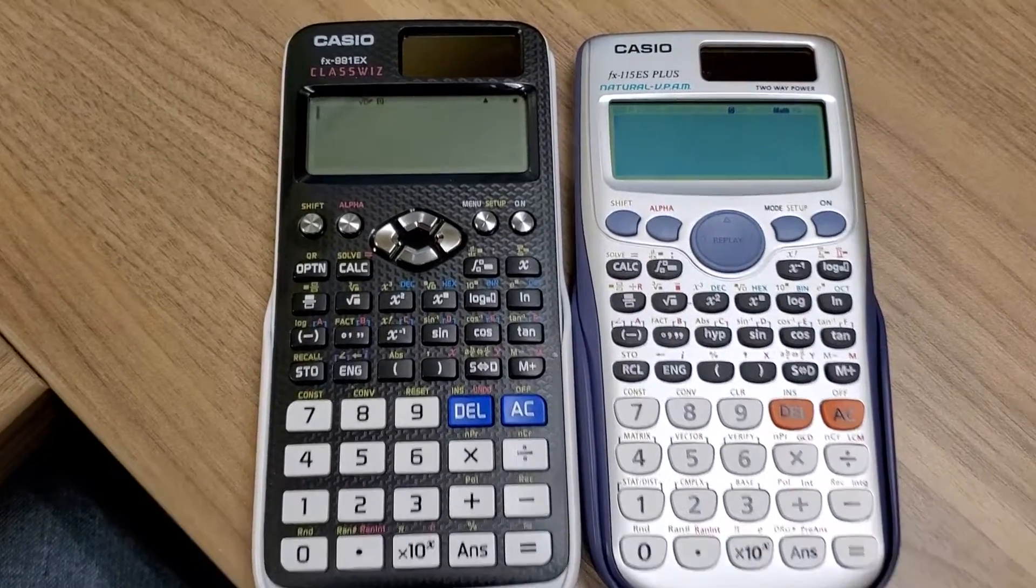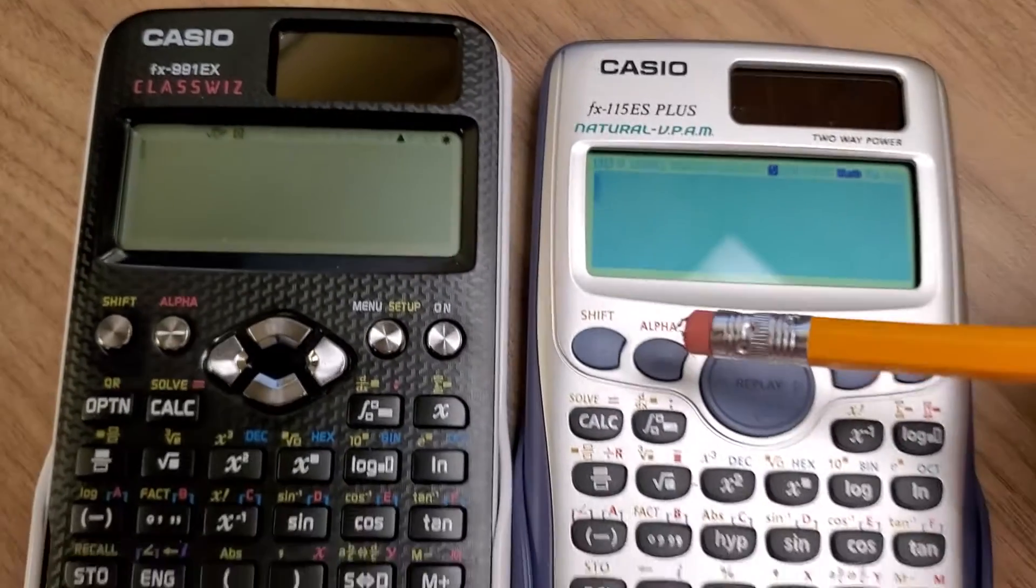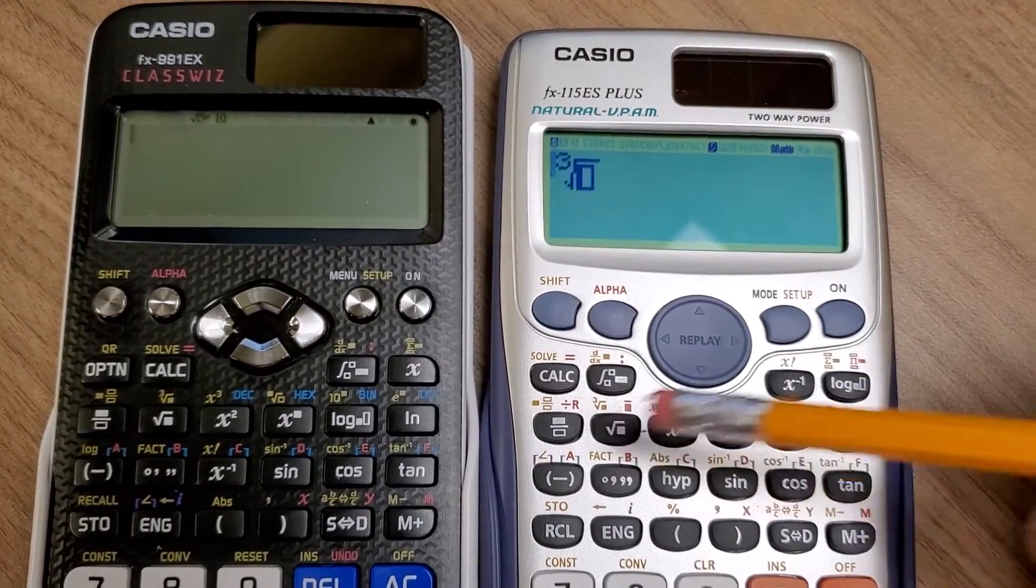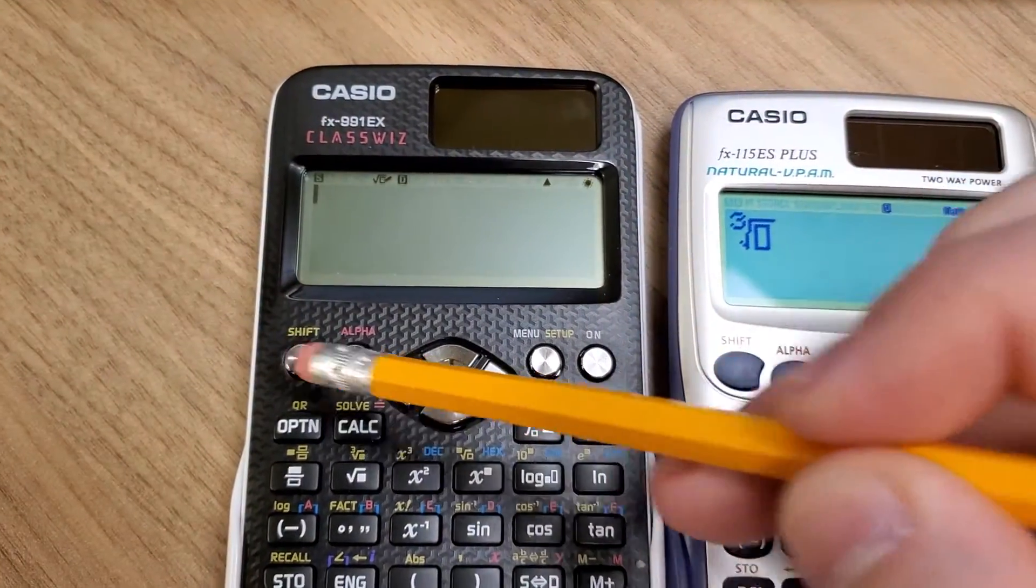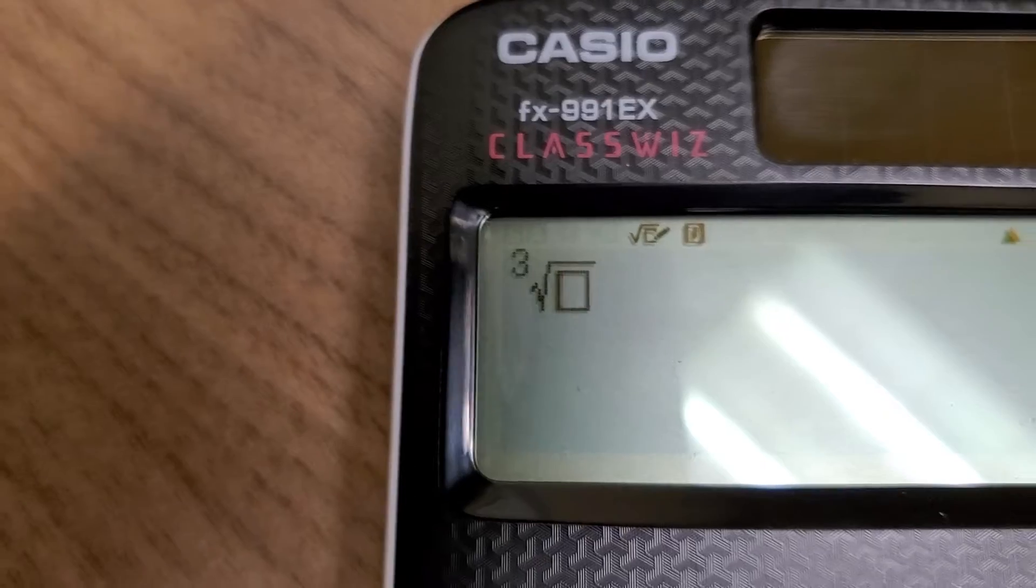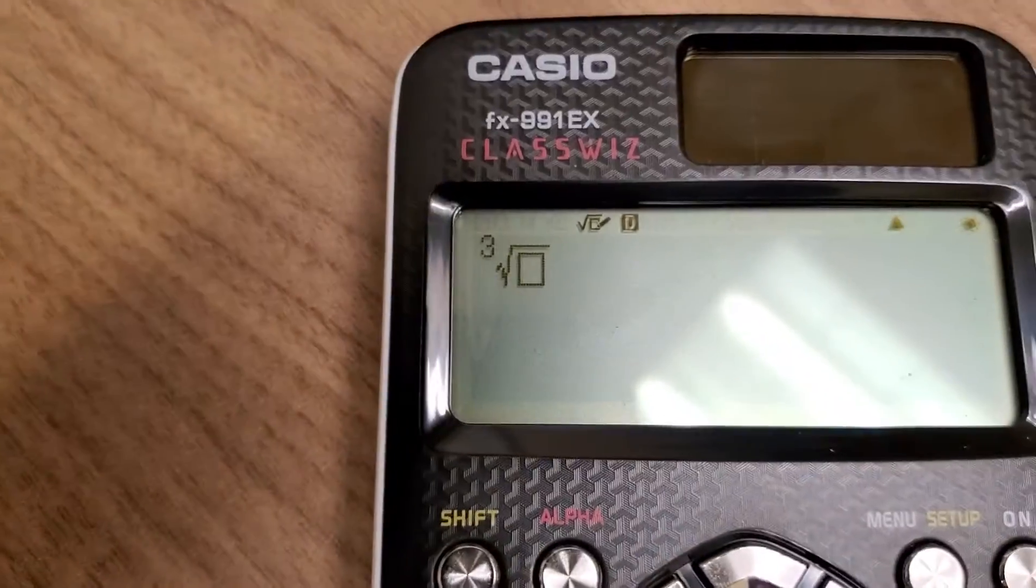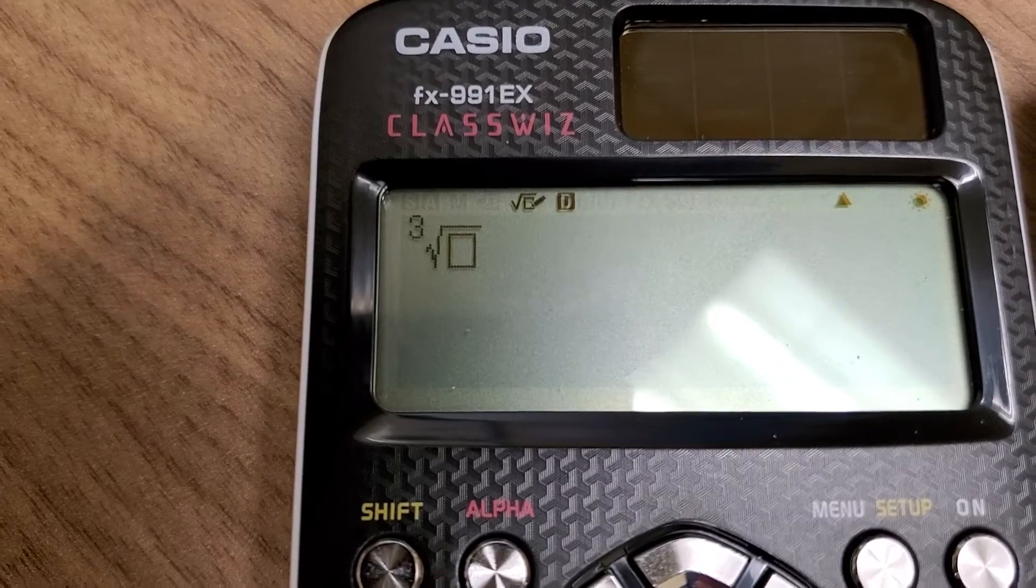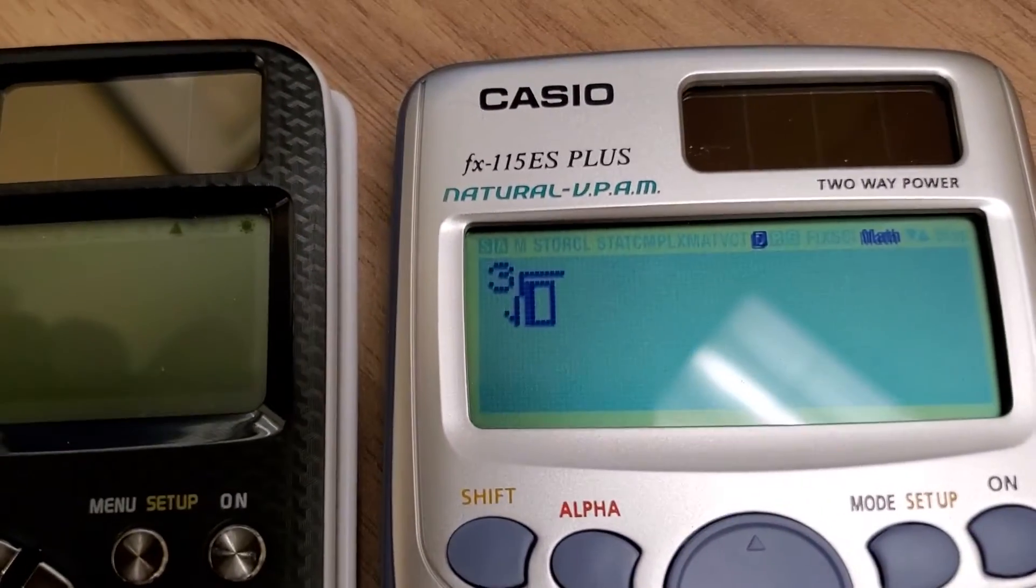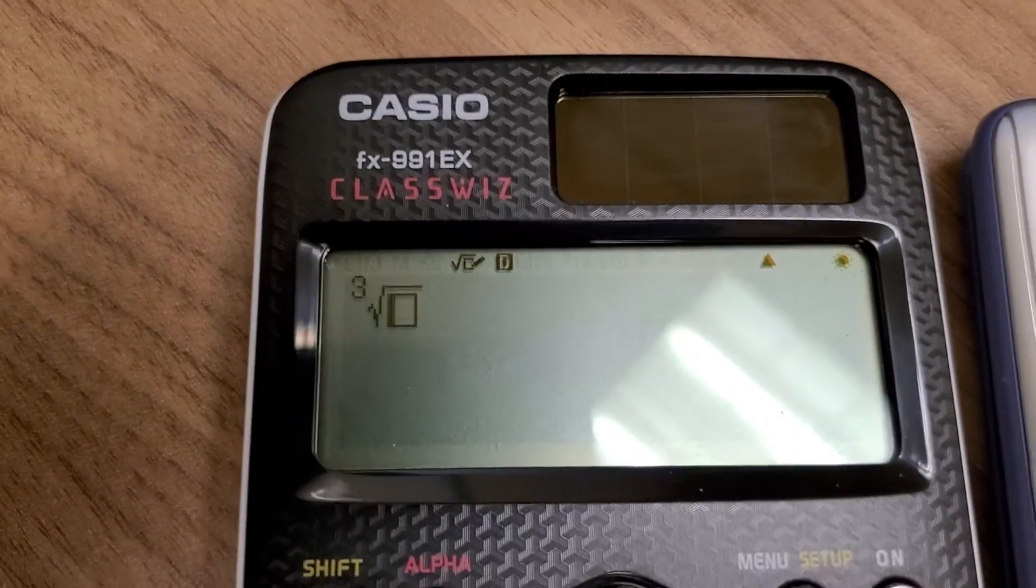There are a couple of differences here. If you look at the display, like for example, if I do cube root on this calculator versus cube root on this calculator, you're going to see that the font is different. So the ClassWiz looks a little bit more snazzy, I guess you might say, as far as the way it displays stuff on the screen than the Casio does. That's just one of the issues: the font, size, and style.